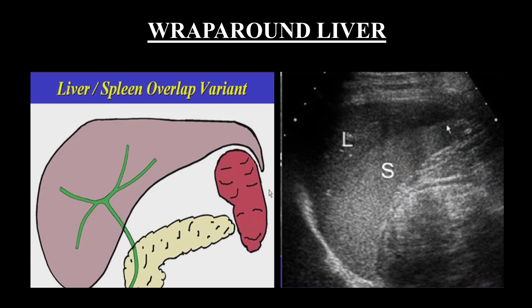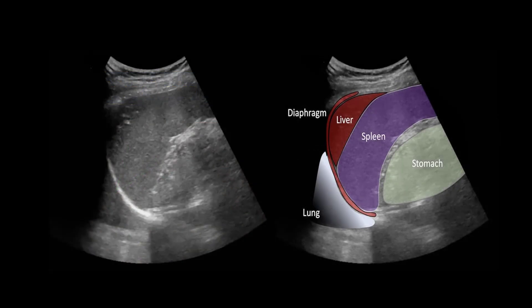There is also the Riedel lobe variant. The left lobe of the liver may be exceptionally elongated and interposed between the diaphragm and the superior lateral aspect of the spleen. This portion of the liver is less echogenic than the spleen and can simulate a subcapsular hematoma. Doppler scan can confirm whether it is tissue or a hematoma.